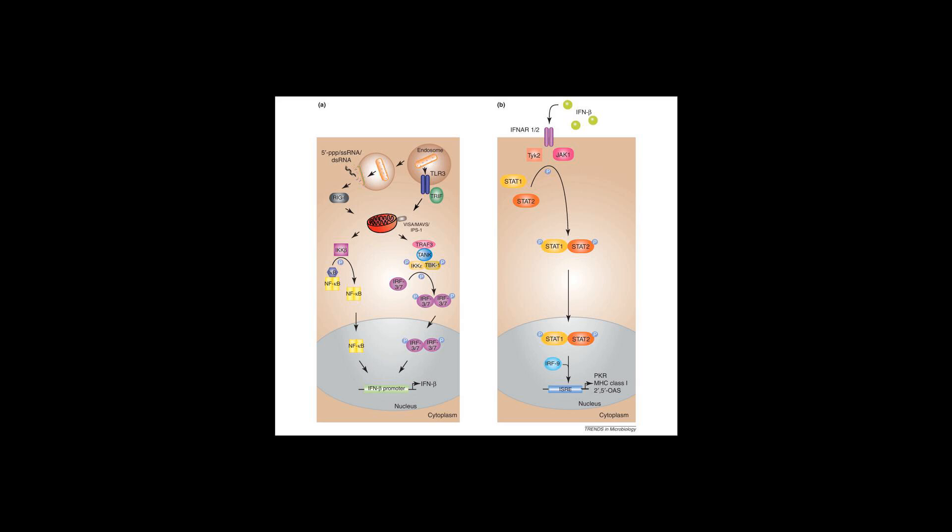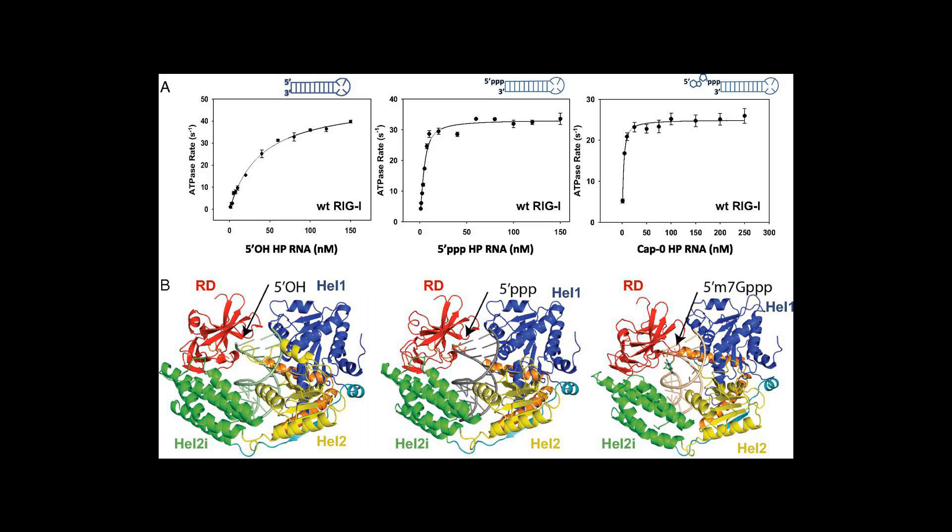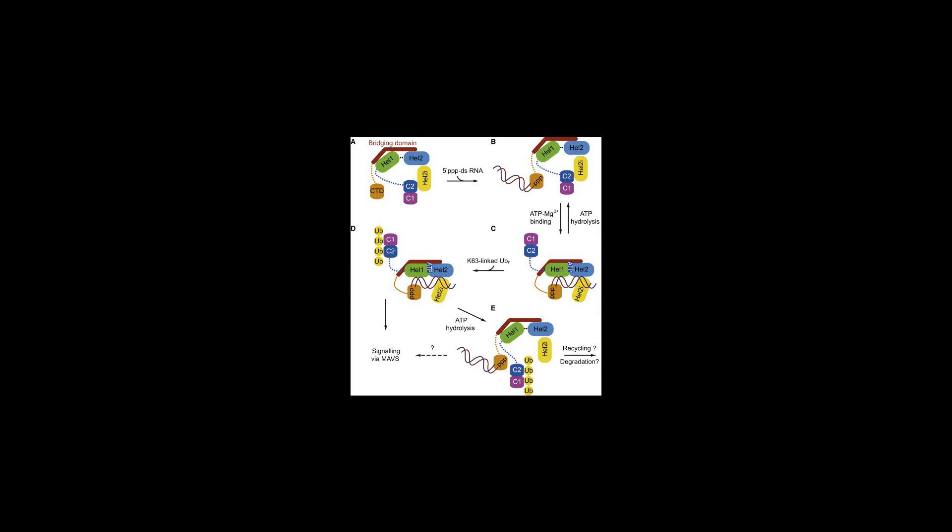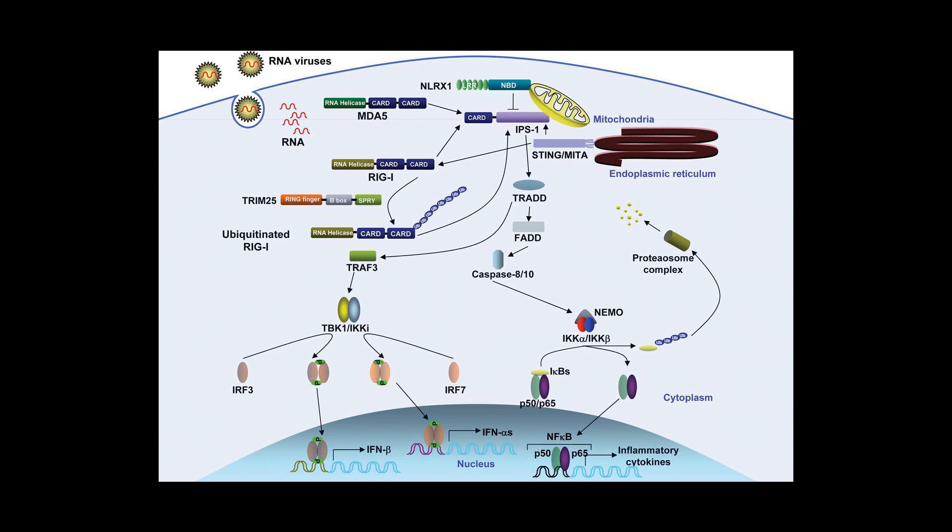Upon activation of RIG-I, the conformational change in the protein allows for CARD-CARD binding to MAVS (mitochondrial antiviral signaling protein), also called IPS-1, a downstream adapter molecule found in the mitochondrial membrane. MAVS furthers the signaling cascade.